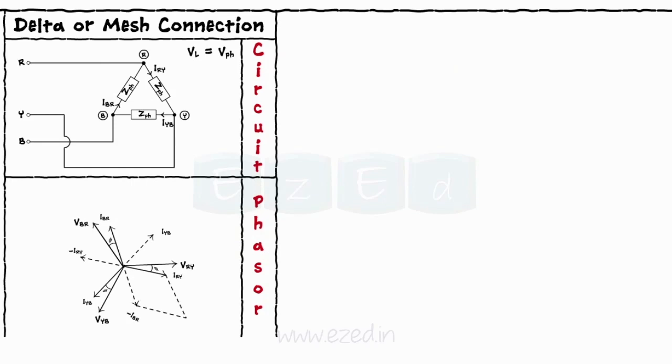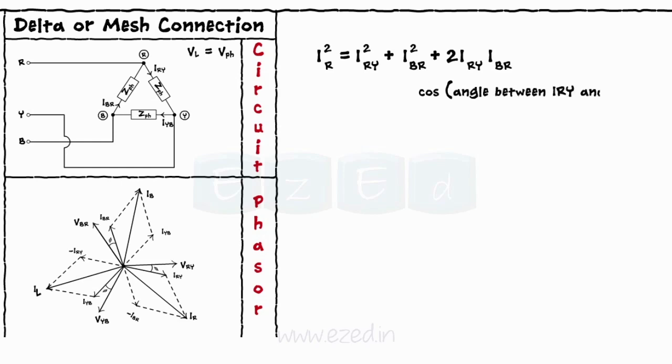Thus completing the parallelogram for the phasor of I_R, we get I_R equals I_RY square plus I_BR square plus 2 into I_RY into I_BR into cosine of angle between I_RY and I_BR. But I_R equals I_L and I_RY equals I_BR equals I_PH.